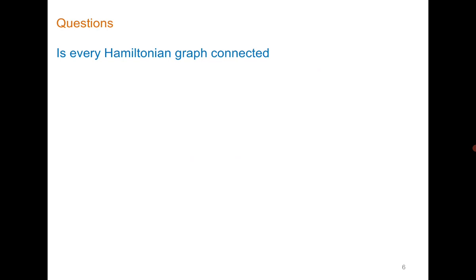A few quick questions. The first one is: is every Hamiltonian graph connected? Of course yes, because if it is Hamiltonian, then there is a cycle passing through all the vertices, and this means that all the vertices are connected.